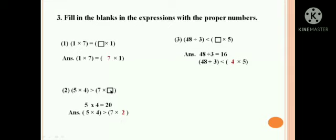The third one: 48 divided by 3 is greater than dash into 5. When you divide 48 by 3, you get 16. So you have to put a number so the answer is greater. When you multiply 4 with 5, 4 into 5, you get 20. So your answer is 4 fives are 20.